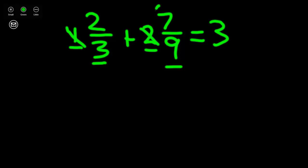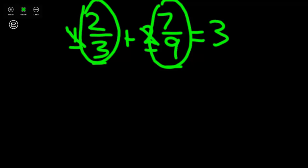Since we already have 9 and our fraction is 7 ninths, we won't need to change that fraction. But we do need to change 2 thirds to an equivalent fraction with a denominator of 9.